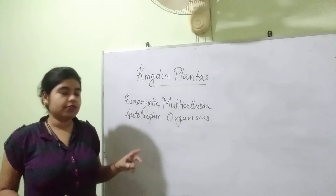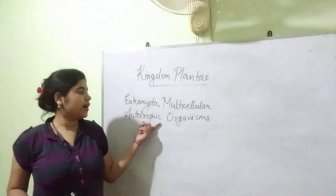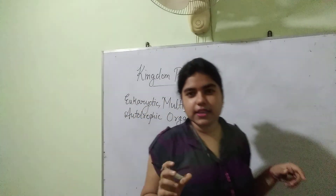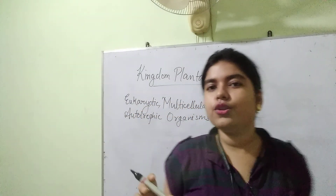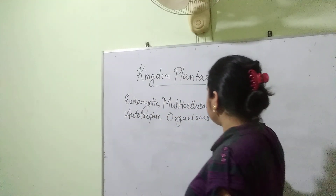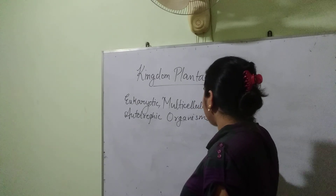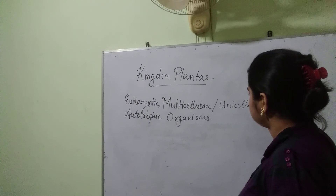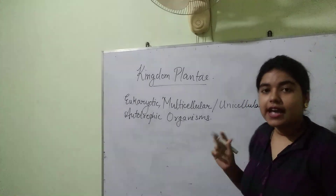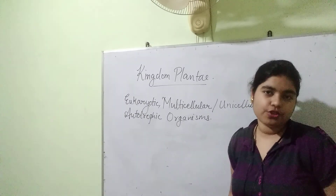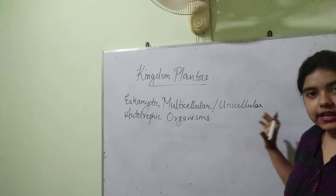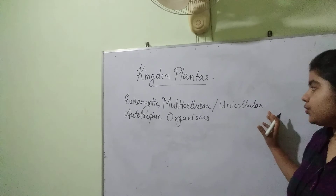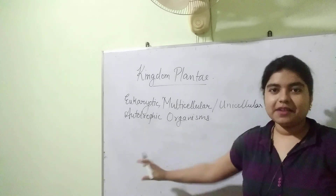They are eukaryotic, multicellular, and autotrophic. But when you say multicellular, there are few exceptions also. There are certain algae which are actually unicellular. So you cannot say that all plants are multicellular. The plants which you see around us are multicellular.